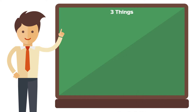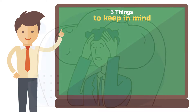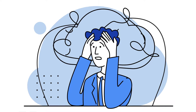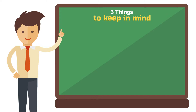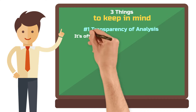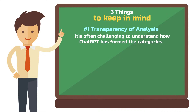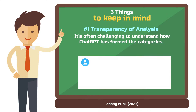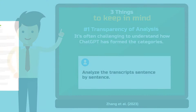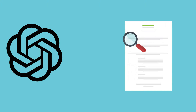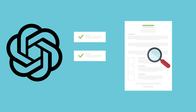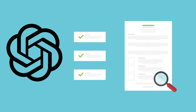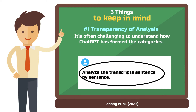Now let me mention a few important limitations to keep in mind. First, transparency — it's often challenging to understand how ChatGPT has formed its categories. The authors of the working paper found that two additional instructions not only improve results but also enhance transparency. First: "Analyze the transcripts sentence by sentence." This prompts ChatGPT to work through the transcripts from beginning to end, just as you would manually, making it less likely that the AI skips or neglects parts of the data.